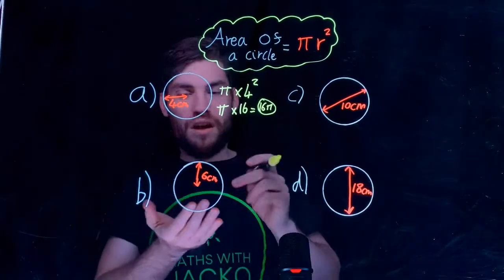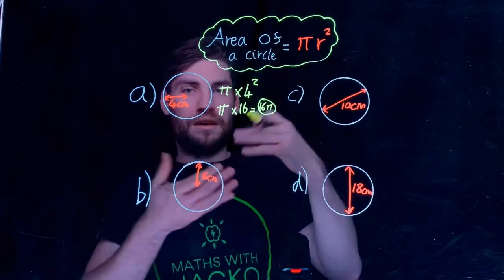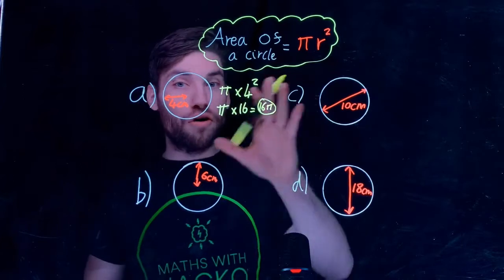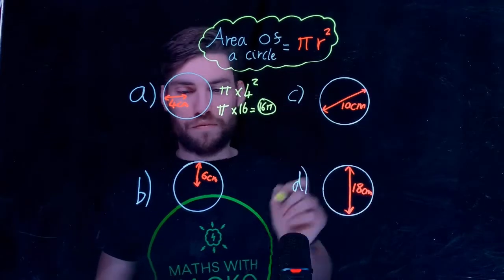If you had a calculator you just do 16 times π equals and you'll get your answer. It'll just be a decimal. This can be given on a non-calculator exam as well in terms of π.